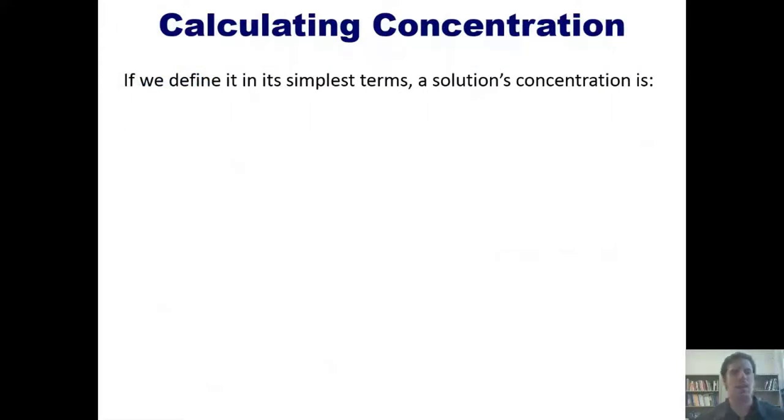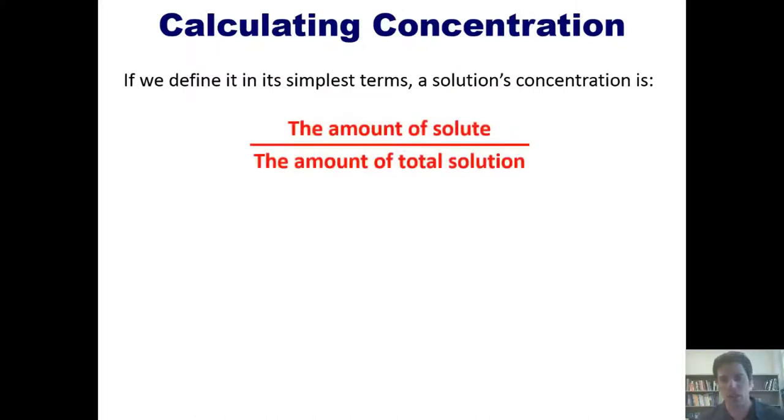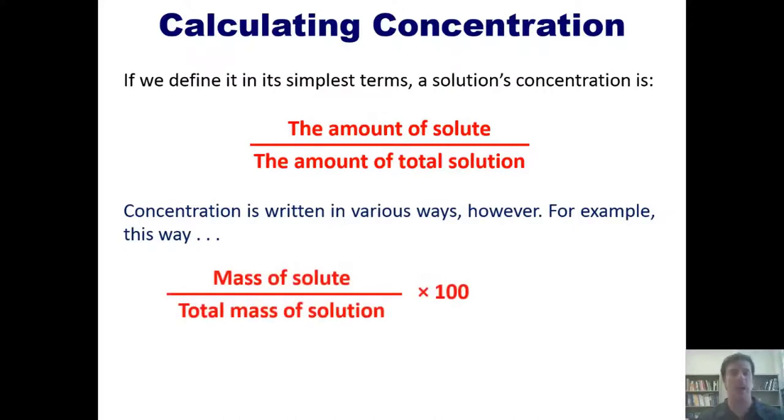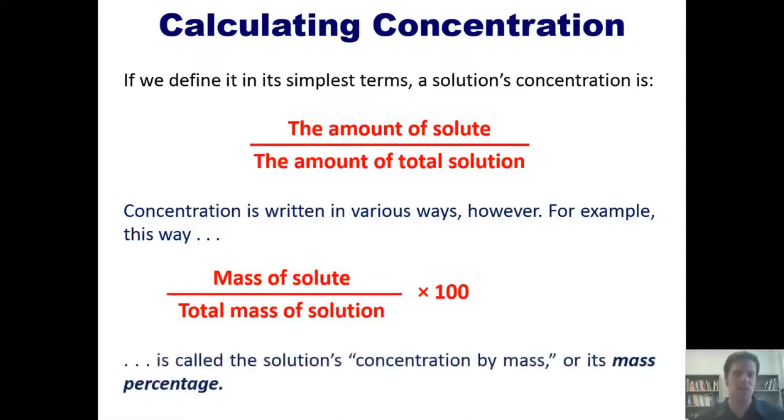Let's get started by first teaching you how to calculate concentration. If we define it in its simplest terms, a solution's concentration is the amount of the solute divided by the amount of solution. As it turns out, concentration can be written in various ways. For example, the mass of the solute divided by the total mass of solution times 100 is known as the solution's concentration by mass or mass percentage.